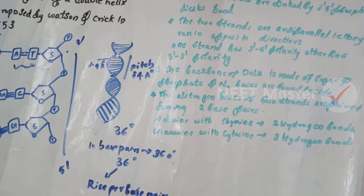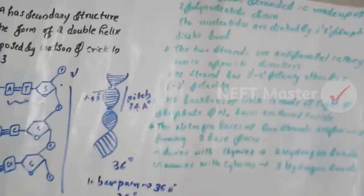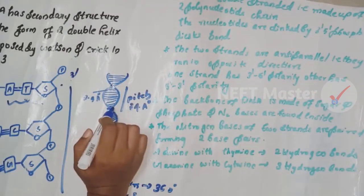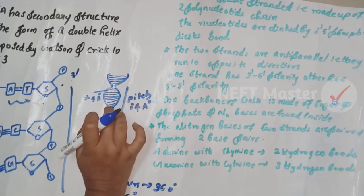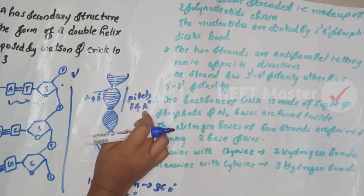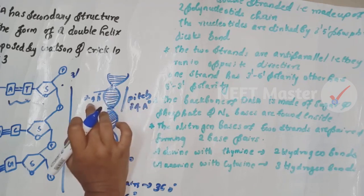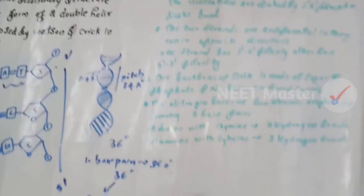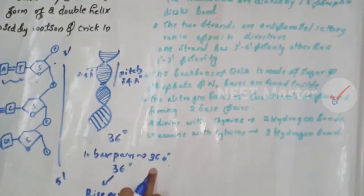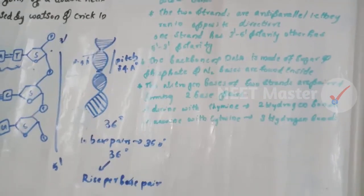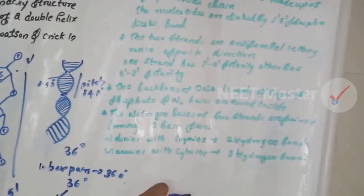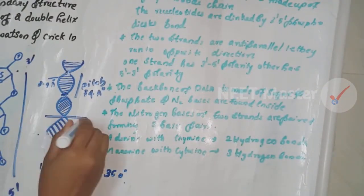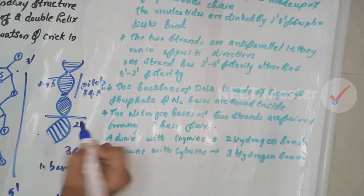To summarize the DNA dimensions: pitch is 34 angstroms, with 10 base pairs per turn, a rise of 3.4 angstroms per base pair, and a rotation of 36 degrees per base pair. The diameter of the DNA double helix is approximately 20 angstroms.